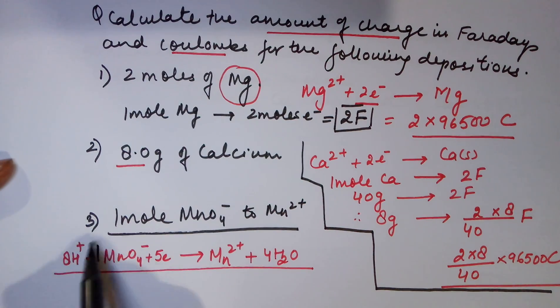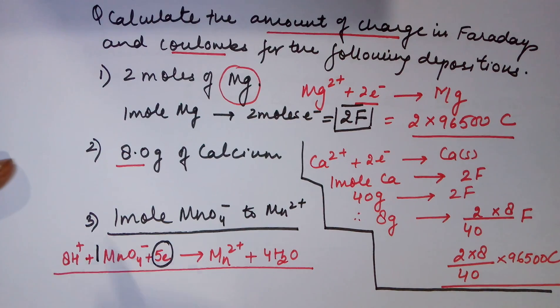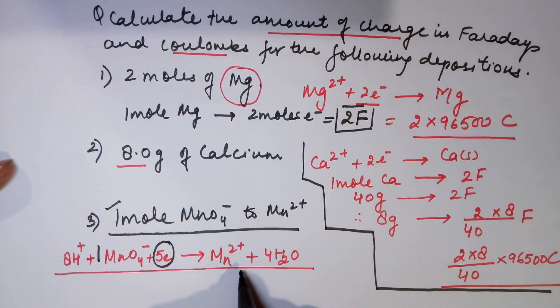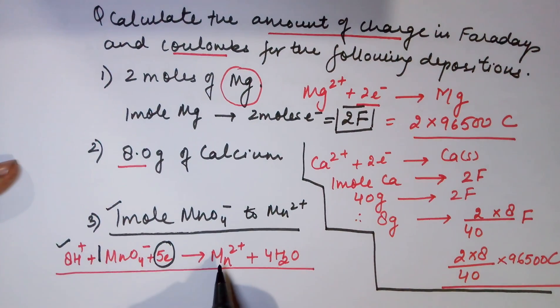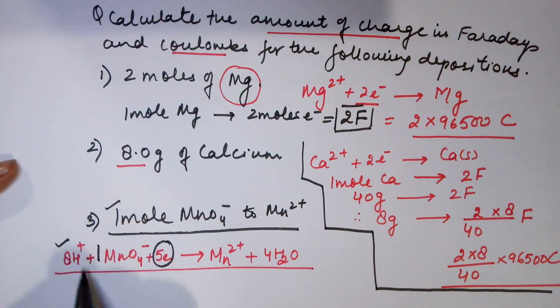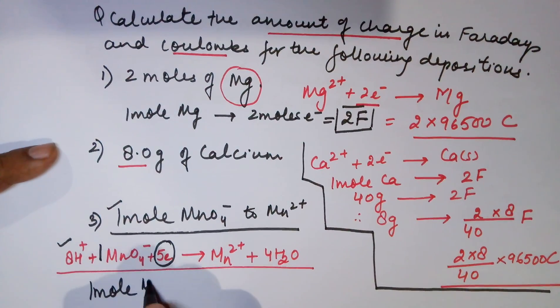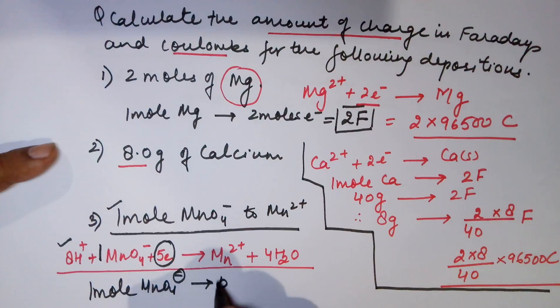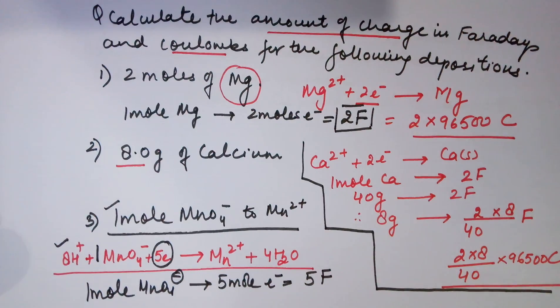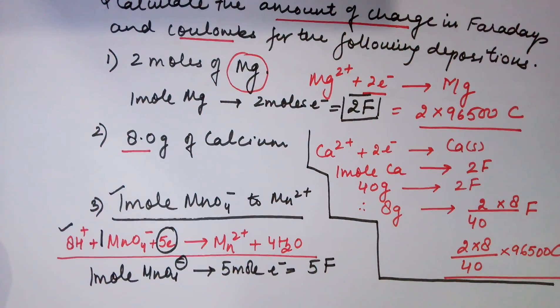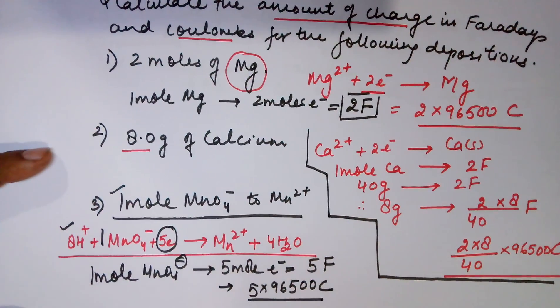As you can see, the MnO4^- of KMnO4 is 1 mole. For 1 mole of MnO4^-, you require 5 electrons. The question was for 1 mole of MnO4^- to Mn^2+ which normally happens only in an acidic medium. As you require 5 electrons per molecule, if you have 1 mole of MnO4^-, your requirement would be 5 moles of electrons which equals 5 Faradays.